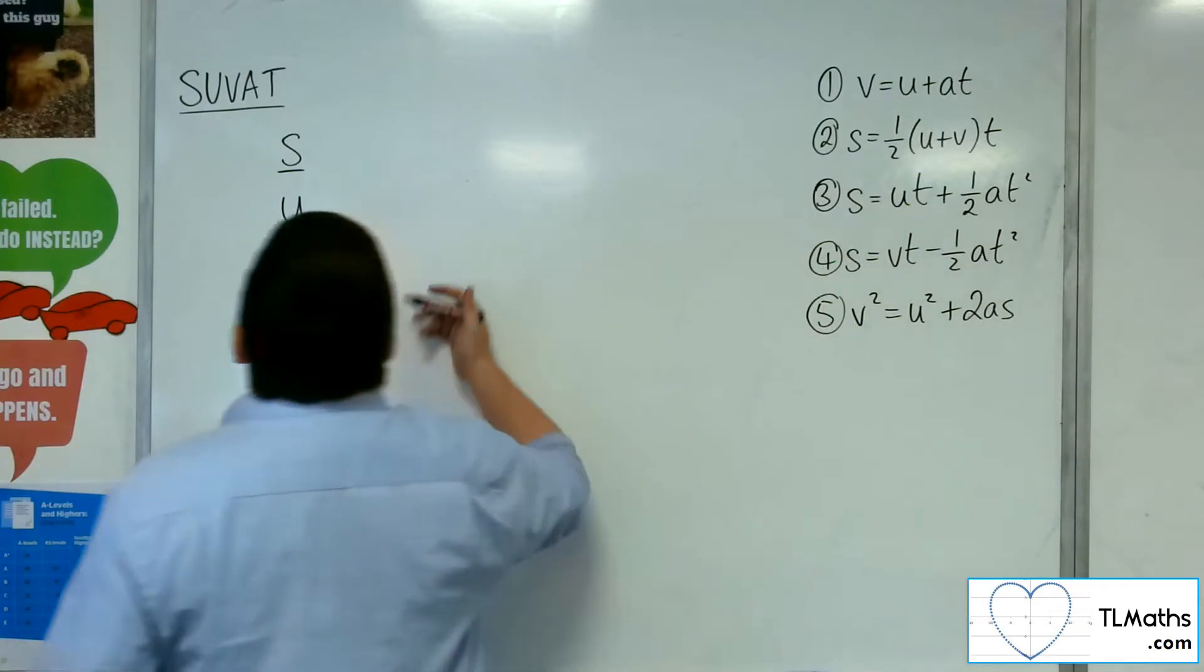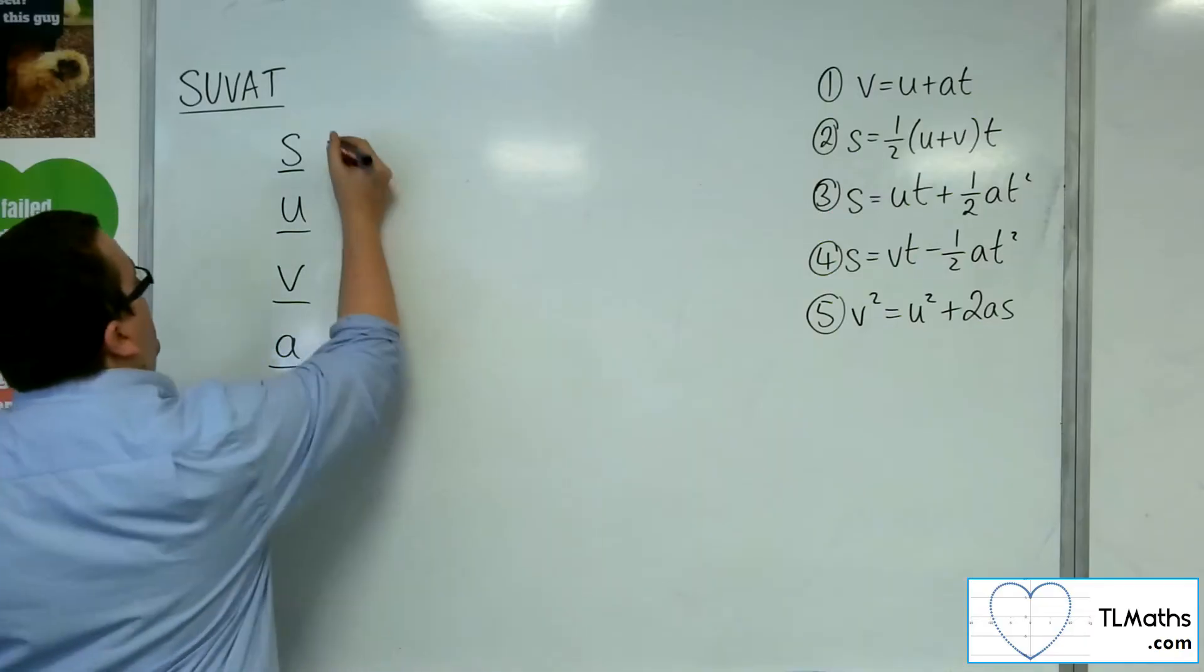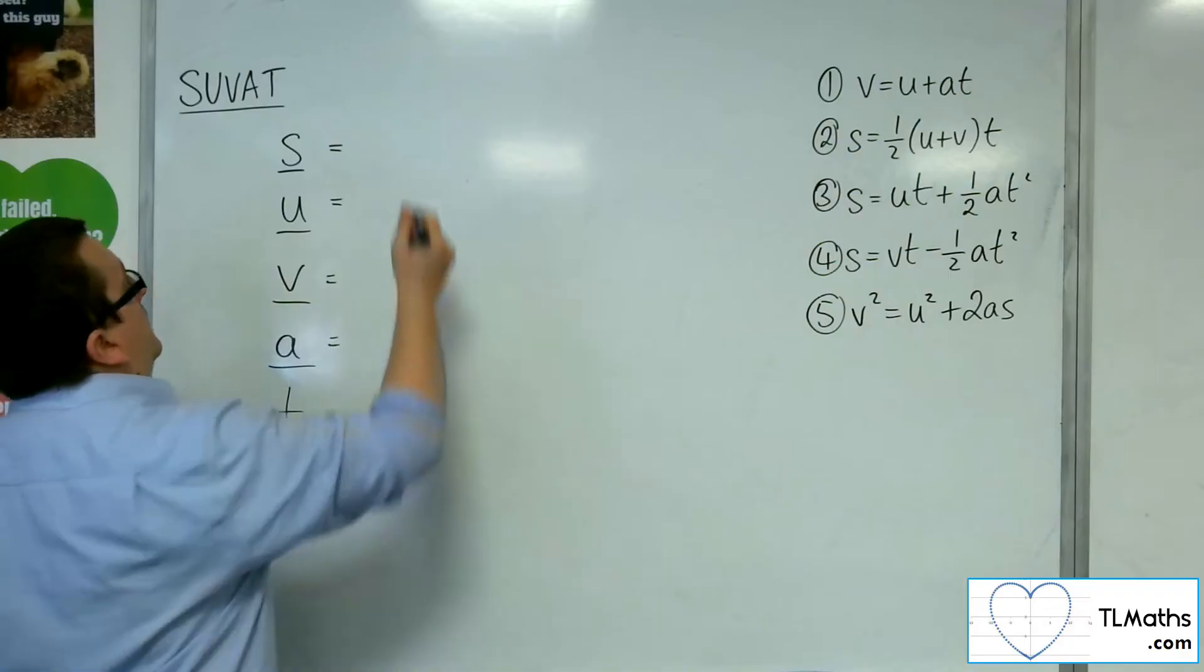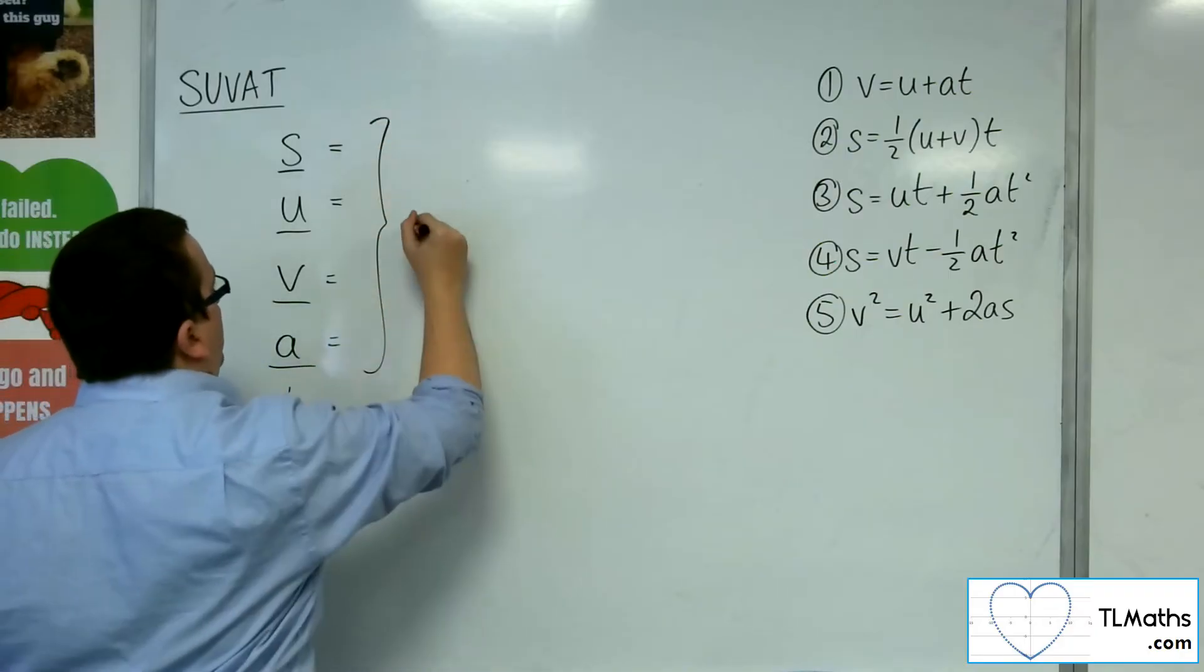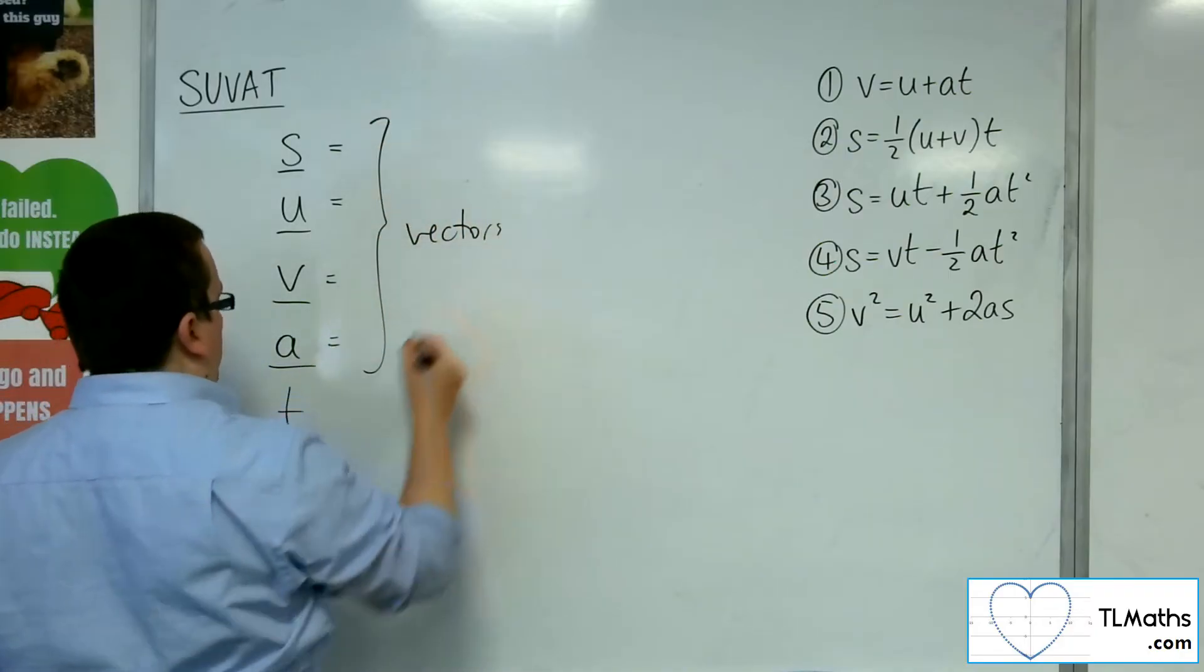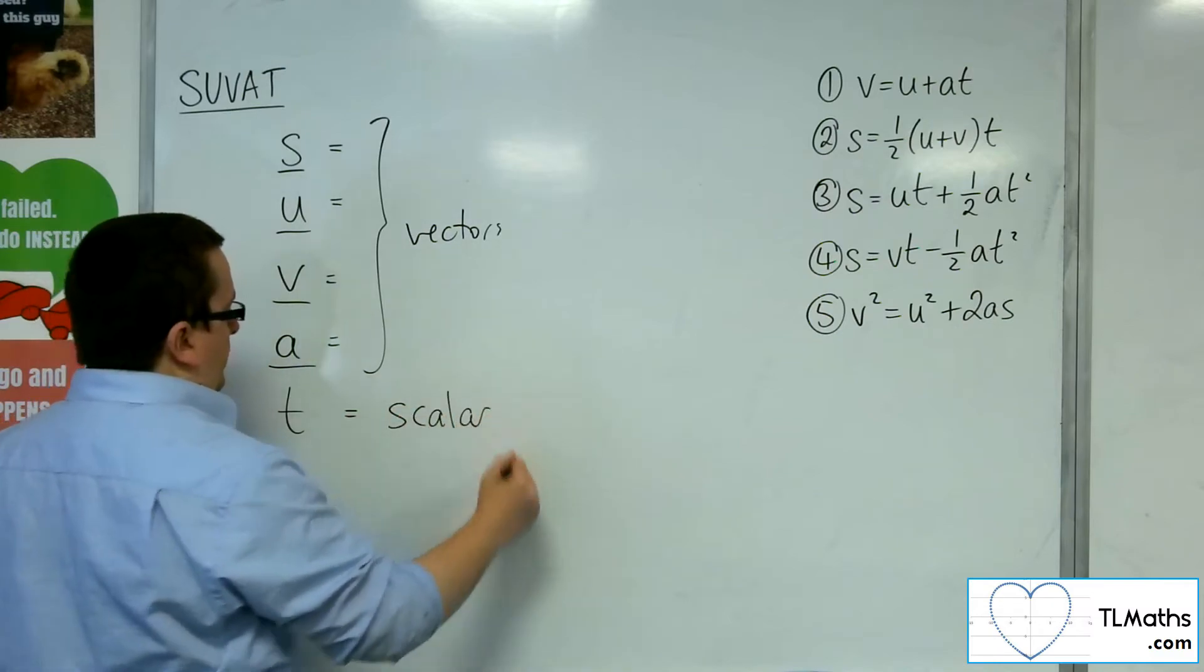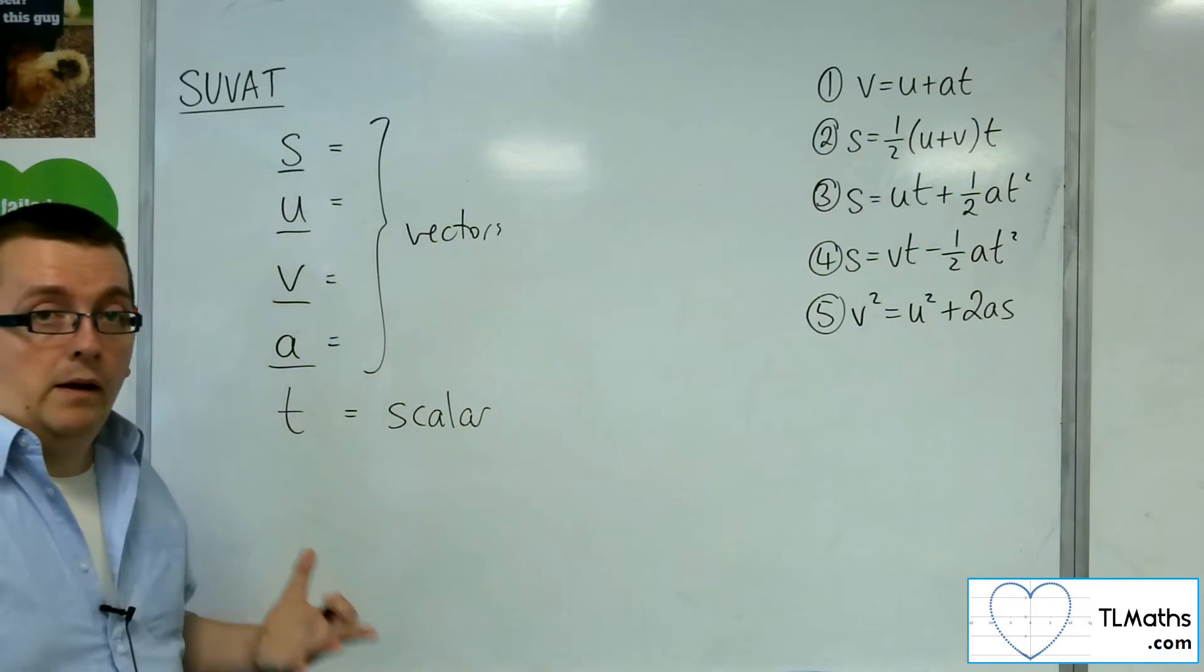So when we're looking at these, we've actually just got S, U, V, and A as the vector parts of this. These are vectors, and this is a scalar. So that means that T is just a number.